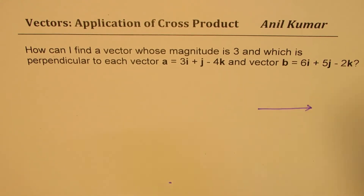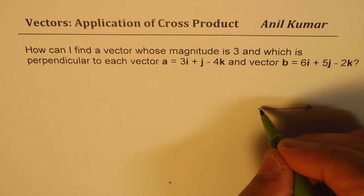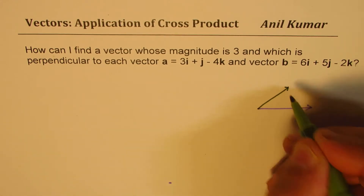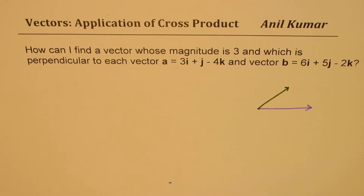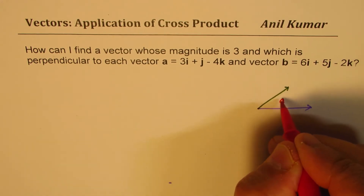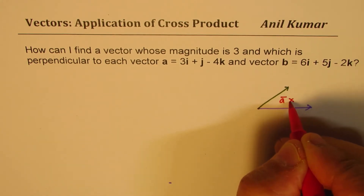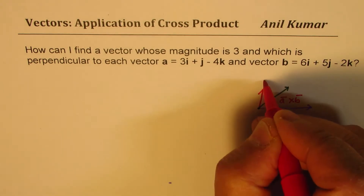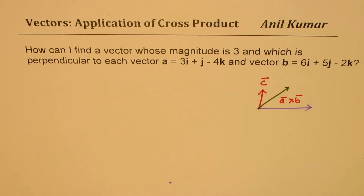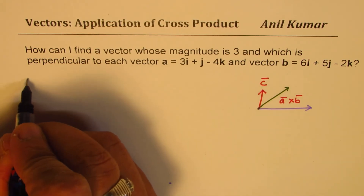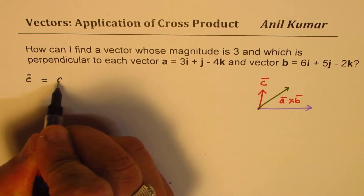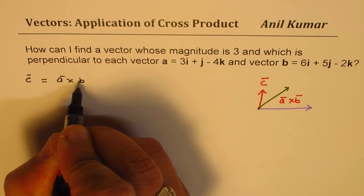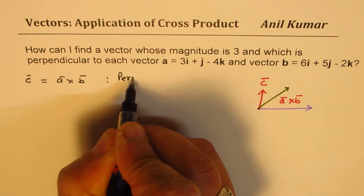Given two vectors a and b, if we want a vector perpendicular to both of them, we need to cross multiply. So in that case we need to do a cross b, and you get a vector which will be perpendicular to both of them. Let's call this vector C. So vector C will be equal to a cross b — that is the first part, finding the perpendicular vector.